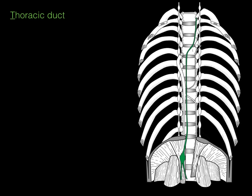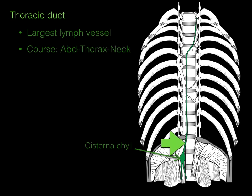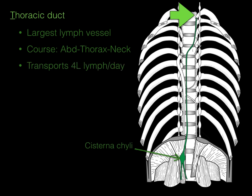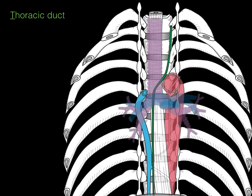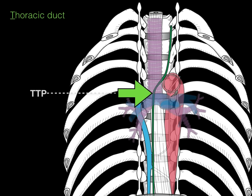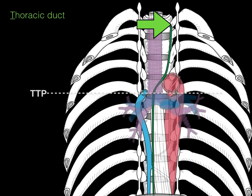Now let's talk about the thoracic lymphatic duct — shown in green because it's the largest lymphatic vessel in the body. It arises from the cisternal chyli and courses from the abdominal into the thoracic into the neck region, transporting about four liters of lymph per day. It runs deep along the vertebral bodies and at the transverse thoracic plane courses to the opposite side, ascending to ultimately drain into the systemic circulation.